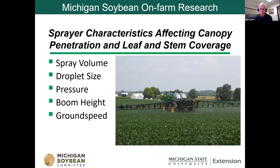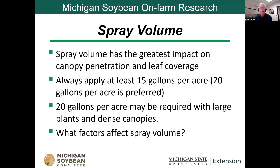There are five characteristics we really have to pay attention to: volume, droplet size, pressure, boom height, and ground speed. We have to account for all five. The first one is spray volume, because it's the most important. You always want to apply at least 15 gallons per acre when using fungicides and insecticides. 20 gallons per acre would be preferred, especially if you've got large plants and dense canopies. Factors that affect spray volume are ground speed, nozzle type, and pressure.